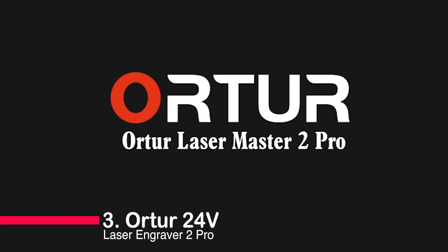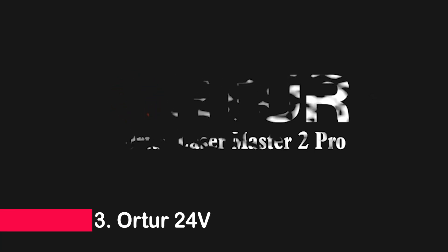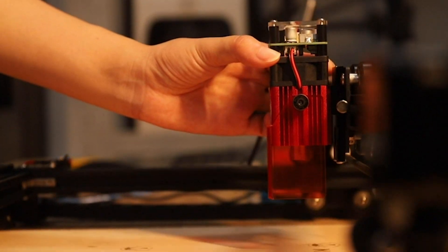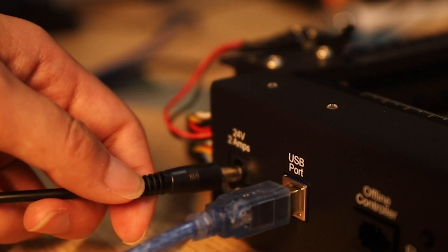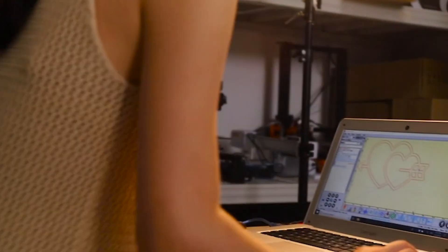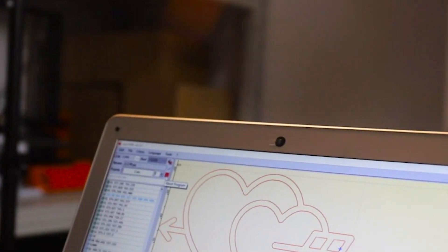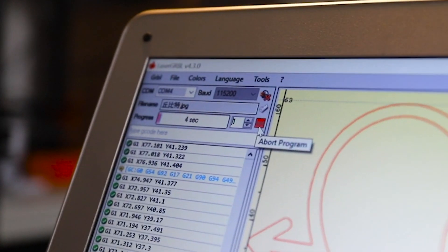Number three, Order 24 Volts Laser Engraver 2 Pro. Introducing the Order 24 Volts Laser Engraver 2 Pro S2LF, a cutting-edge laser machine that redefines precision and speed. With 5.5-watt power, it effortlessly cuts metal and wood up to 10 millimeters while ensuring safety with five protection features.